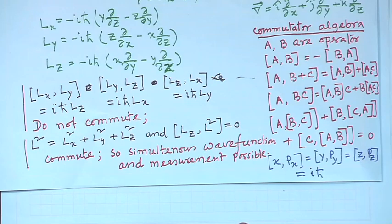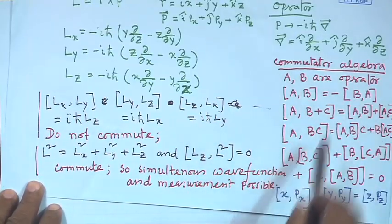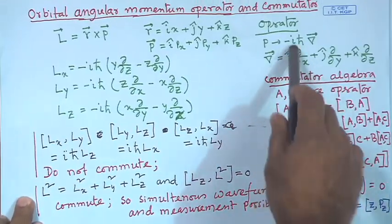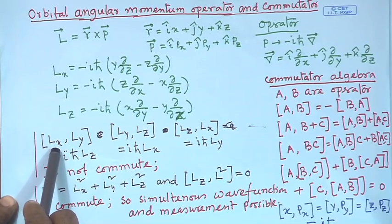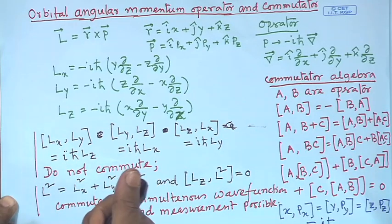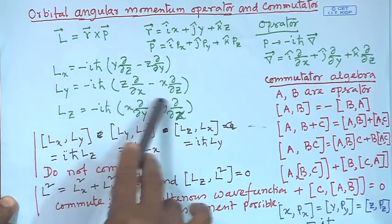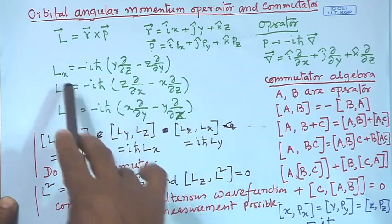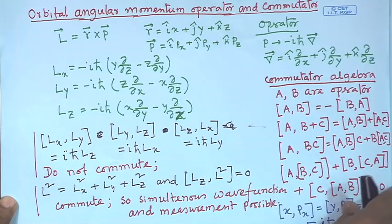Since position and momentum do not commute, they do not have a simultaneous eigenfunction and cannot be measured simultaneously. If you measure one accurately, the other will be infinitely uncertain — that is the rule of quantum mechanics. Using this commutator algebra and the position-momentum relation, one can easily prove that the orbital angular momentum has three components L_x, L_y, L_z. Their commutation relation can be proved: these three components do not commute with each other.